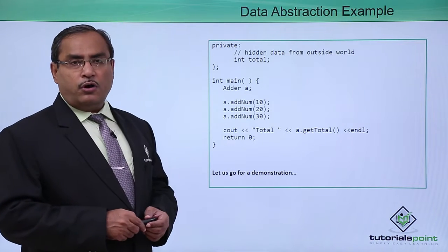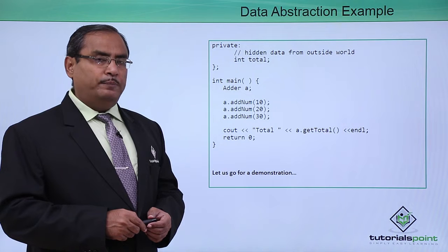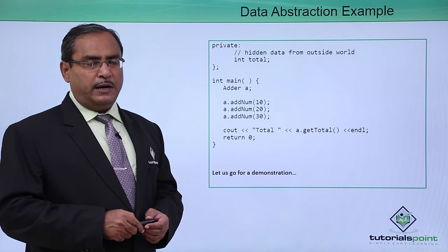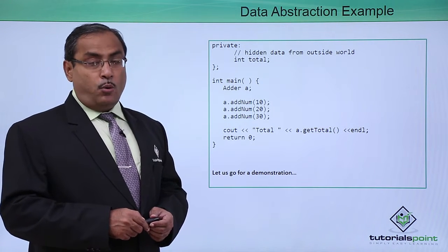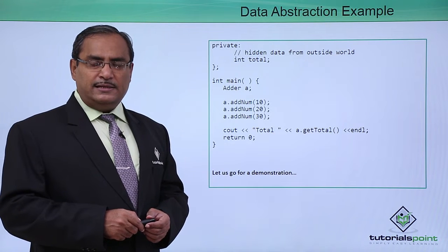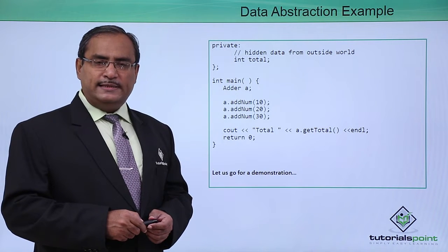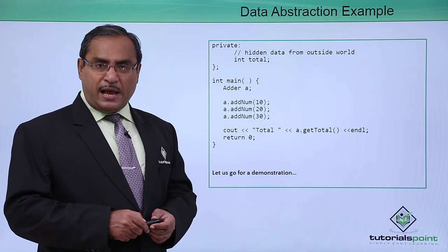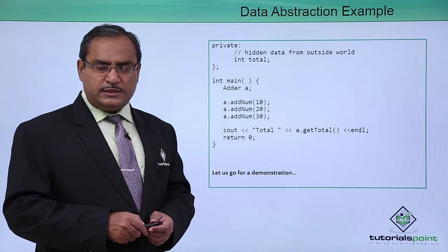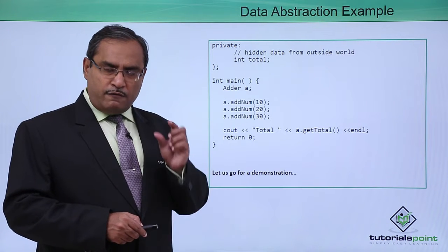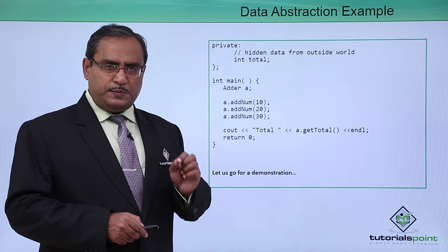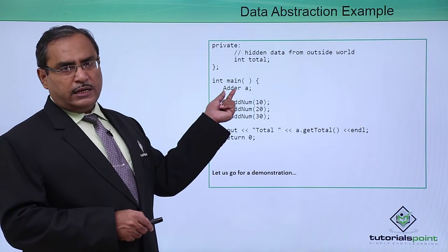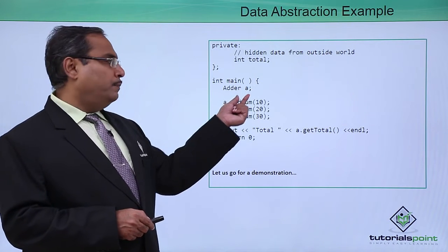Now let us declare an object of this class adder. An object is nothing but an instance of a class. Whenever you talk about instantiation, it means some memory space in the primary memory — the RAM of the system — is being allocated for that respective variable. Here, 'adder' is the class name and 'a' is the respective object.